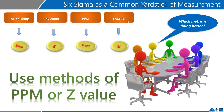This makes decision-making much simpler and comparisons much simpler. This is yet another very critical usage of Six Sigma — usage of Six Sigma as a common yardstick of measurement of business processes. I hope this simple video helps you get a perspective of the same. Thank you.